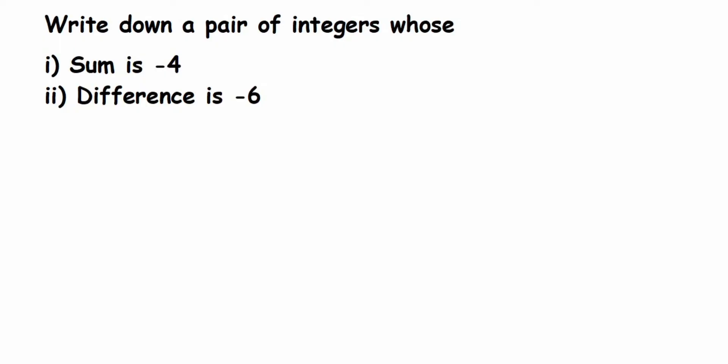Hey everyone, here's a question from the integer chapter. The question is: write down a pair of integers whose sum is minus 4, and the second question is difference is minus 6. So they are asking us to write down a pair of integers, like two integers, where when you add these two numbers your sum should be equal to minus 4.